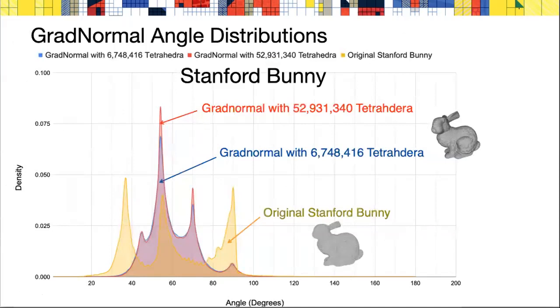When we input a mesh surface and apply the GradNormal algorithm to it, we can't get the theoretical bounds that we have in the smooth case. But in practice, we still get very good angle distribution. Here we see angle distributions for the original Stanford bunny in yellow, and for the GradNormal algorithm applied to the bunny at two different resolutions. The GradNormal algorithm is more centered around 60 degrees and gives very few triangles with angles below 30 or above 100 degrees.